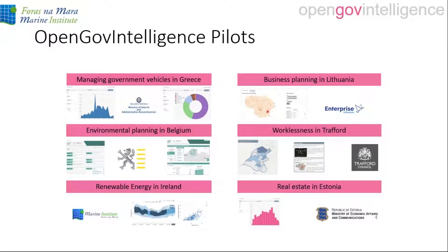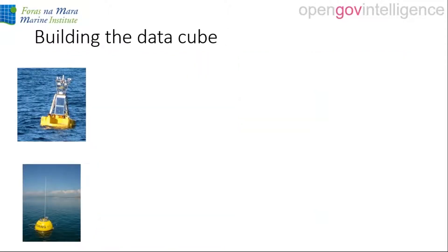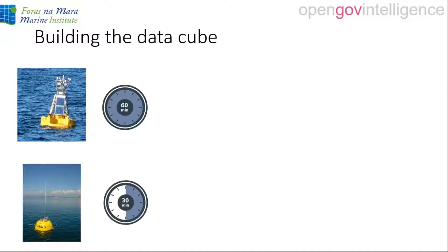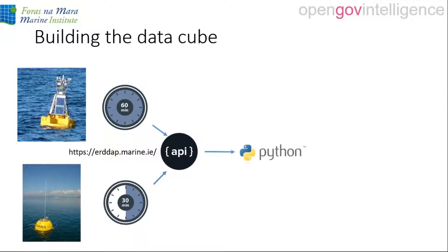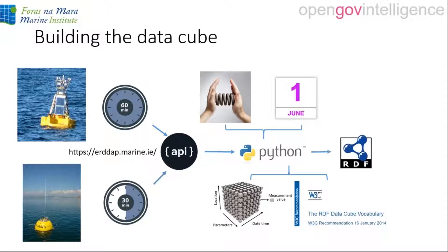We have a data buoy network of weather buoys and wave buoys on the west coast of Ireland. We wanted to build a data cube to serve those data at a lower resolution at the daily level. The data comes in from the wave buoys at 60-minute intervals and 30-minute resolution, available through the ERDDAP API at the Marine Institute. We use Python scripts to convert those data into daily statistics — mean, standard deviation, and maximum — then apply the RDF Data Cube vocabulary and load them into a SPARQL endpoint.